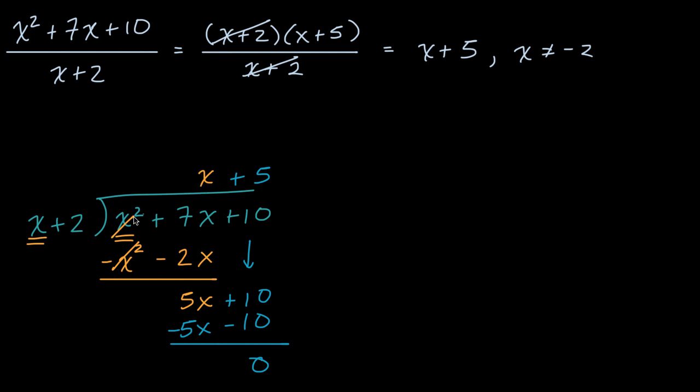You say, look, x plus two times x plus five is going to be equal to this. Now, if you wanted to rewrite this expression the way we did here and say this expression is equal to x plus five, we would have to constrain the domain. You'd say for all x not equaling negative two, for these to be completely identical expressions.